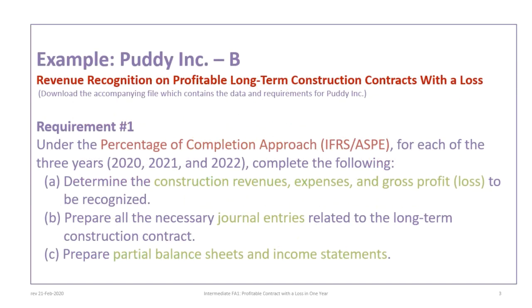This tutorial is based on the Putty Inc. B example. It is a variation of the Putty Inc. A example that was used for the previous tutorial, but this time the data has changed so that we can show a loss in one year. Please be sure to download the correct file so you can follow along. This tutorial will focus on requirements one and two of the Putty Inc. example, emphasizing accounting for presenting the results of fully profitable long-term contracts with a loss under both percentage of completion and completed contract approaches.